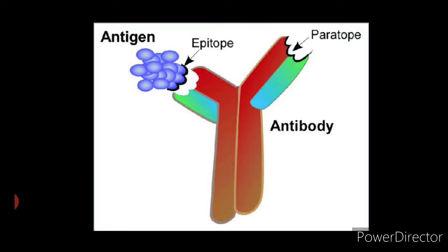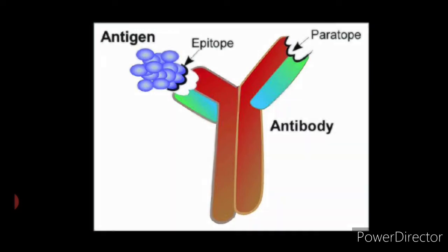Epitope is that area on the surface of an antigen that stimulates a specific immune response and against which that response is directed. It is synonymous with an antigenic determinant. Paratope is the site in the variable domain of an antibody or T-cell receptor that binds to an epitope on an antigen.